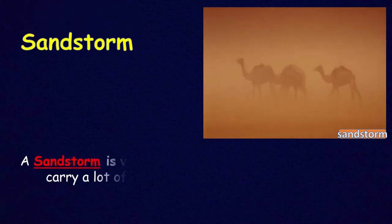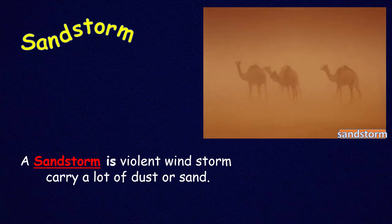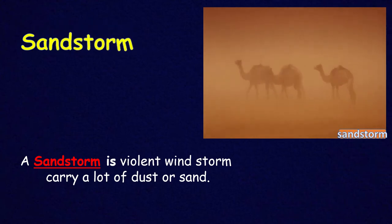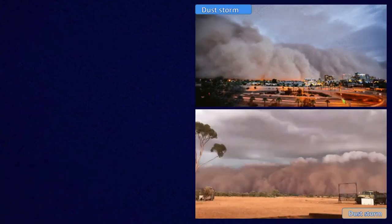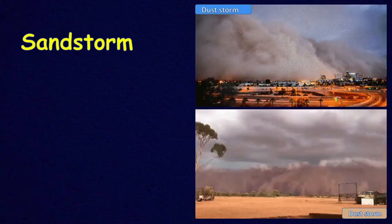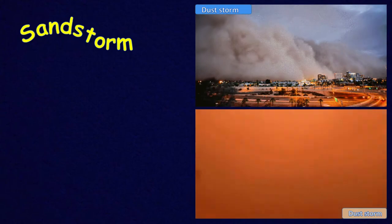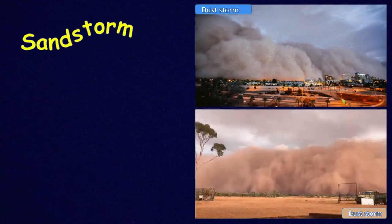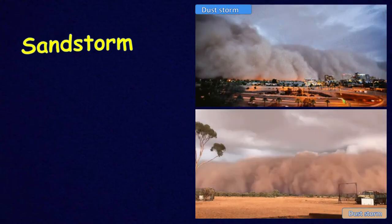This one is another storm, but it's different — it doesn't come with rain. We call it a sandstorm. It's a violent wind storm that carries a lot of dust or sand. And with that one, you can get stuck — you cannot go anywhere.